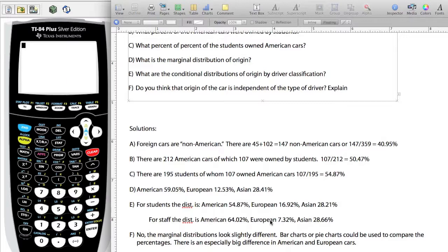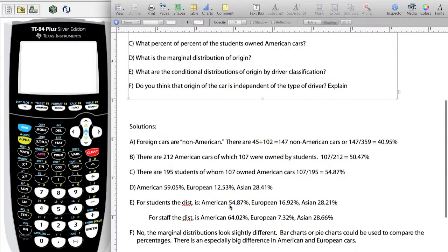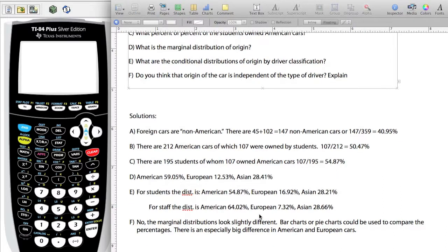Now how could I show that? The percentages are nice, but it's really obvious when I create bar charts or pie charts to show the difference in the distributions. Here it is for students, here it is for the staff members. You can show that the pies or the pieces are not the same size. You could even compare them back to the original marginal. Students and staff members have a different distribution than the overall distribution. So it does make a difference. They are not independent. So they would be dependent on driver. And you would notice the biggest difference in the American and Europeans.